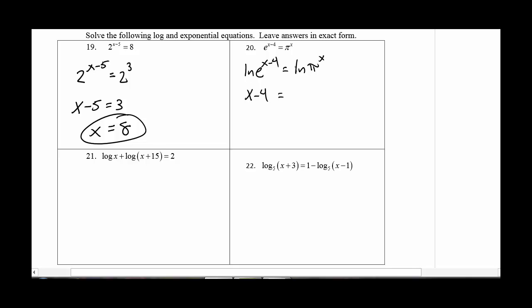On the left side, that's actually a property. ln of e to the x minus 4, that actually simplifies down to x minus 4. And the ln of pi to the x, well, the fact that I have the ln there means that I can apply the property that allows me to take out the exponent. So x ln of pi.